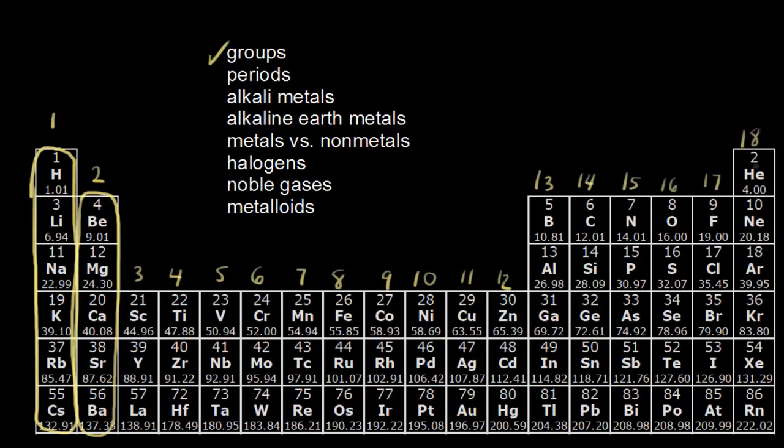So that's one way to number your groups. There is another way to number your groups, and that would be to say that group one is group 1A, group two is group 2A. And then kind of ignoring groups three through 12, continue on with your numbering system.